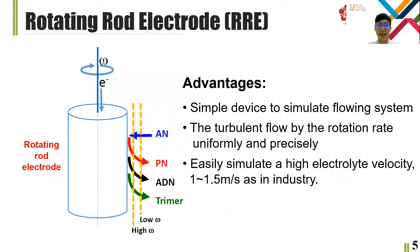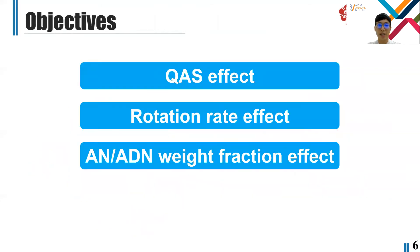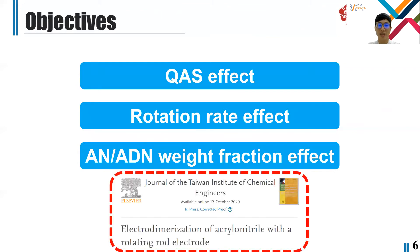This study uses the rotating rod electrode, RRE. It is a simple tool that can simulate turbulent flow, and it can simulate a high flow rate similar to industrial conditions. In the left figure is the rotating rod electrode. The orange dashed line represents the diffusion layer thickness. As the rotation rate increases, the diffusion layer thickness decreases. My objective was to use the rotating rod electrode in this system to study the mass transfer effect at higher flow rates close to industrial conditions, and also the effect of QAS and AN-ADN weight fraction. Part of the result has been published in the Journal of the Taiwan Institute of Chemical Engineers.